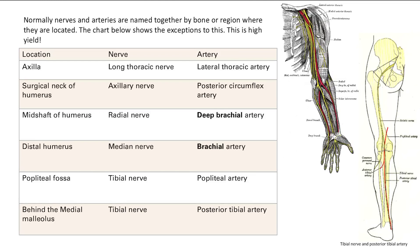When you go to the surgical neck of the humerus — remember the humerus is up here, this is the neck — you have the axillary nerve. And the artery associated with it is called the posterior circumflex artery.